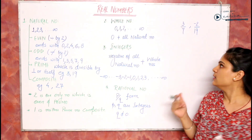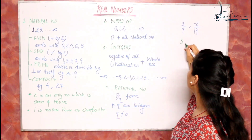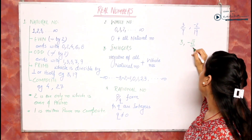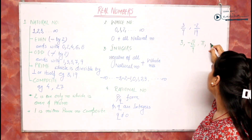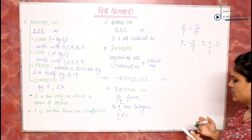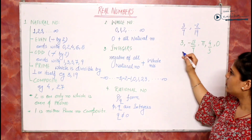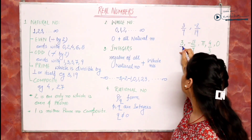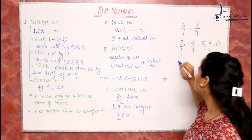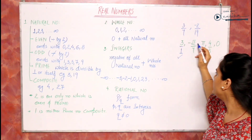Now let's check a few examples to see whether they are rational numbers or not. The examples are: 3, minus root 2, 7 by 4 upon 3, and 0. Is 3 a rational number? Yes, because it can be represented as 3 upon 1, which is P by Q form. For minus root 2, both numbers should be integers, but root 2 is not an integer, so this cannot be a rational number.